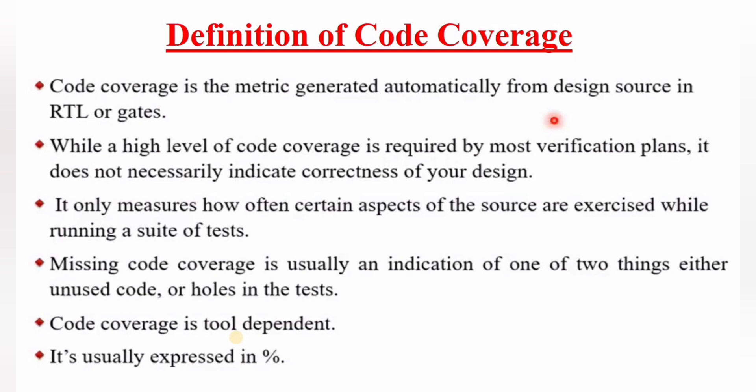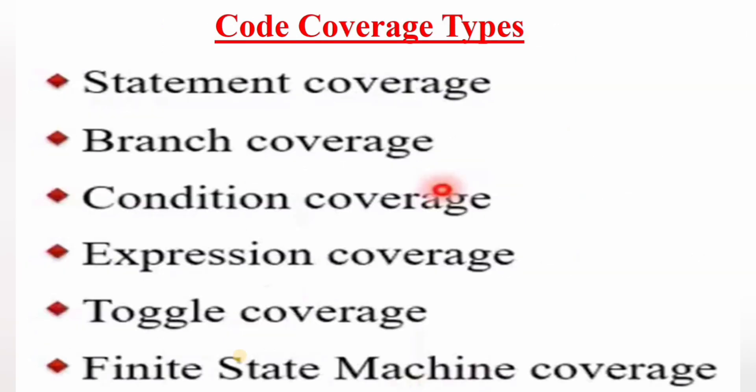Code coverage is usually expressed in terms of percentage — remember, high code coverage is always preferable. Code coverage is done by the design engineer, who then submits the report to the verification engineer. The different types of code coverage are: statement coverage, branch coverage, condition coverage, expression coverage, toggle coverage, and FSM (Finite State Machine) coverage.